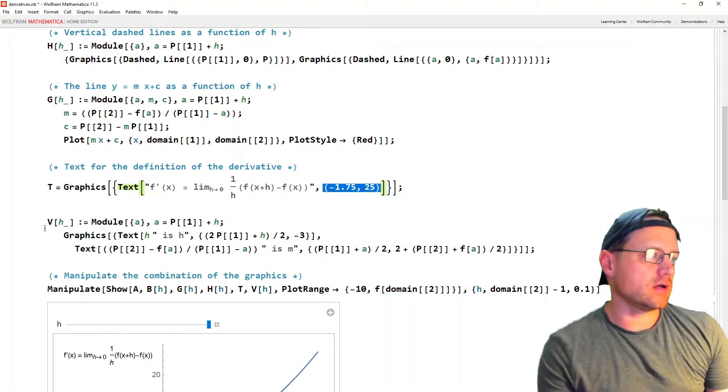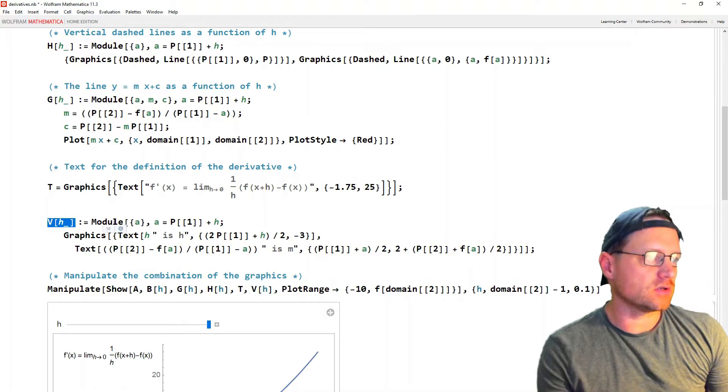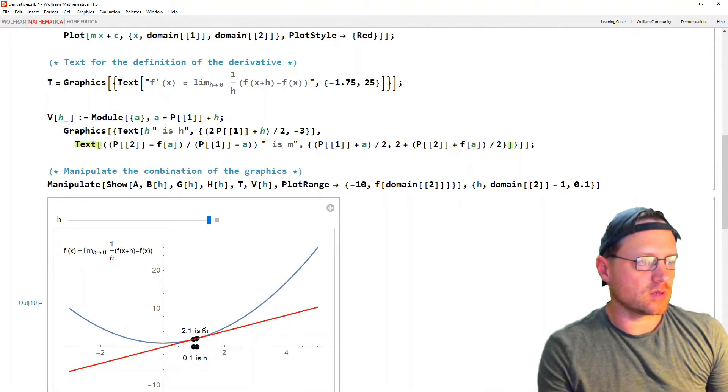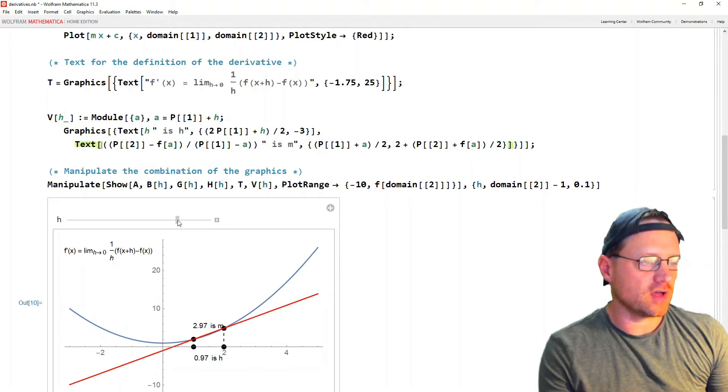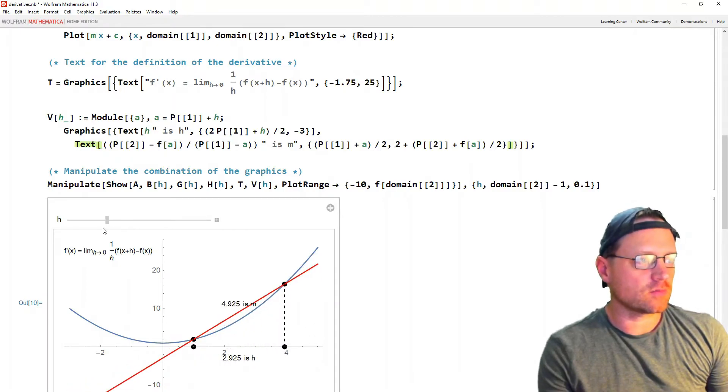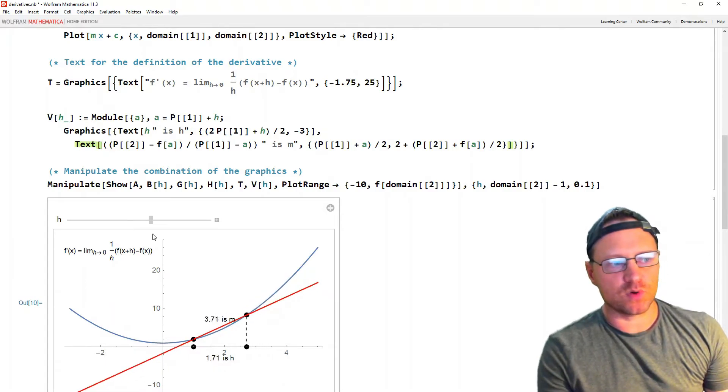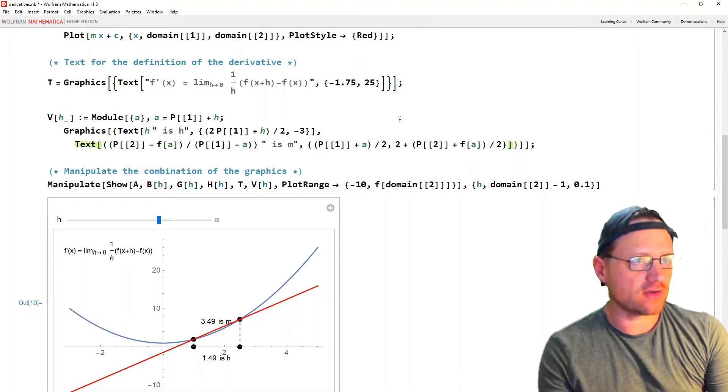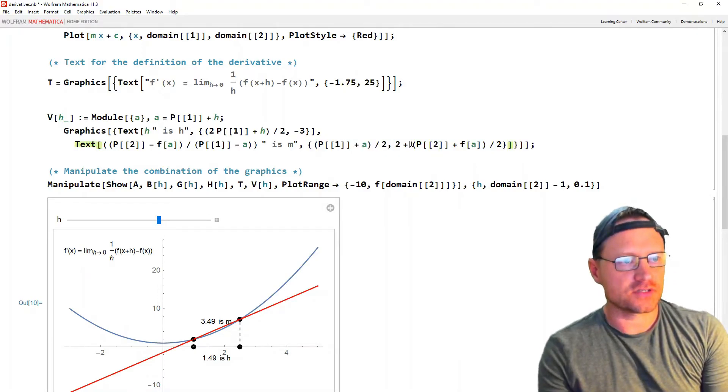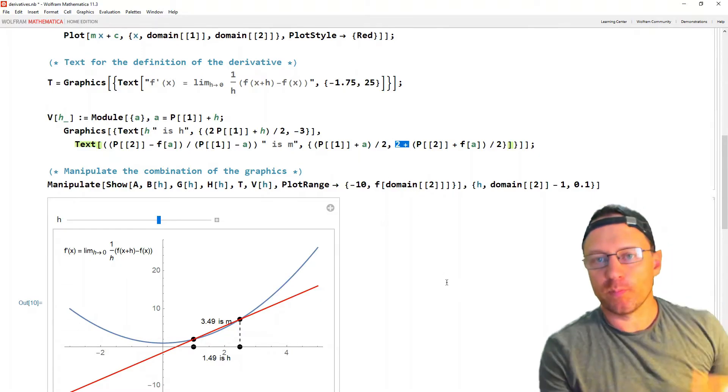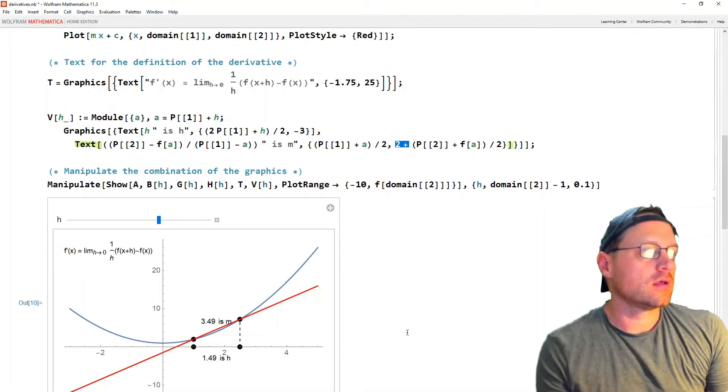And almost finally is another function here, again using module, but this function is going to plot text. And I'll just show you it's the text that goes above the slope and below that, saying the exact numerical value that the slope takes on at that given h step, and the h value itself at that given point in the slider. So I had to take averages of certain points to place those where I wanted, and then even add 2 to that to get it to go above the secant.